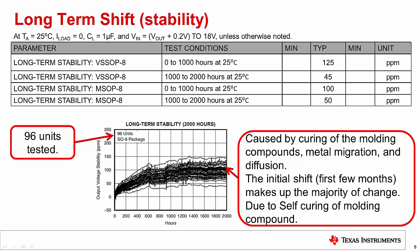Another approach is to do an initial burn-in, meaning the product is baked at high temperature to accelerate the aging of the product and get past the initial shift.